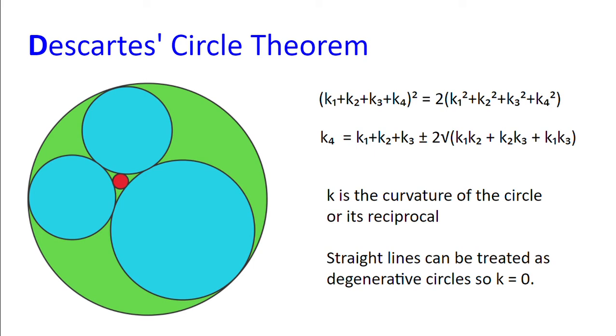And we can rearrange that equation to get K4, which is the missing curvature we want to find, which will be K1 plus K2 plus K3 plus minus 2 multiplied by the square root of K1 multiplied by K2 plus K2 multiplied by K3 plus K1 multiplied by K3.